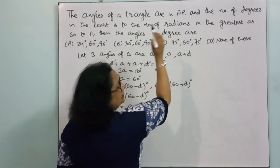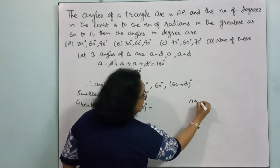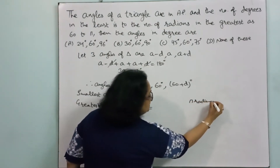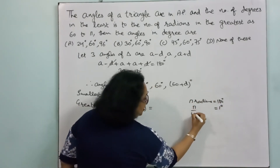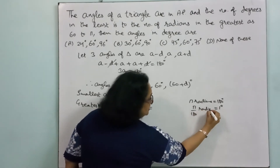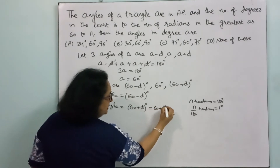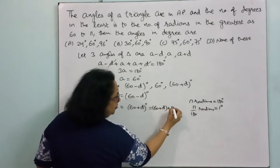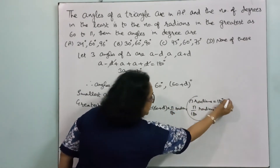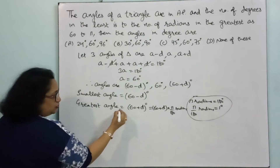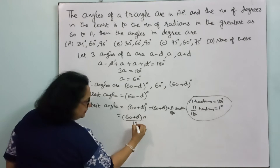To convert to radians: pi radians is equal to 180 degrees, so 1 degree = pi upon 180 radians. Therefore the greatest angle becomes (60 + d) × pi upon 180 radians. This is the formula we apply here, so the greatest angle in radians is 60 plus d into pi upon 180 radians.